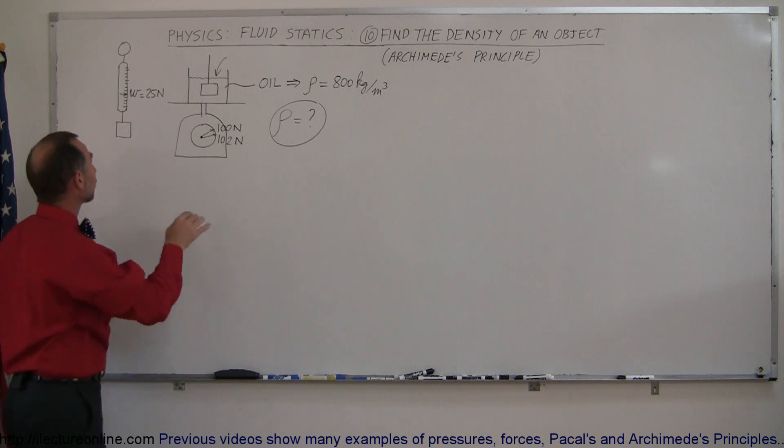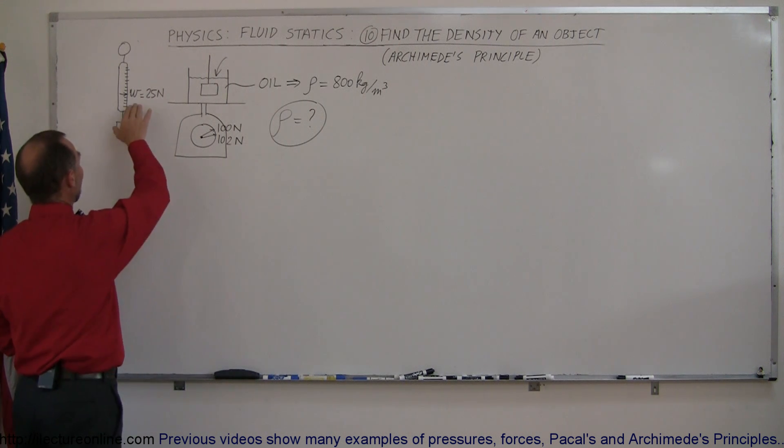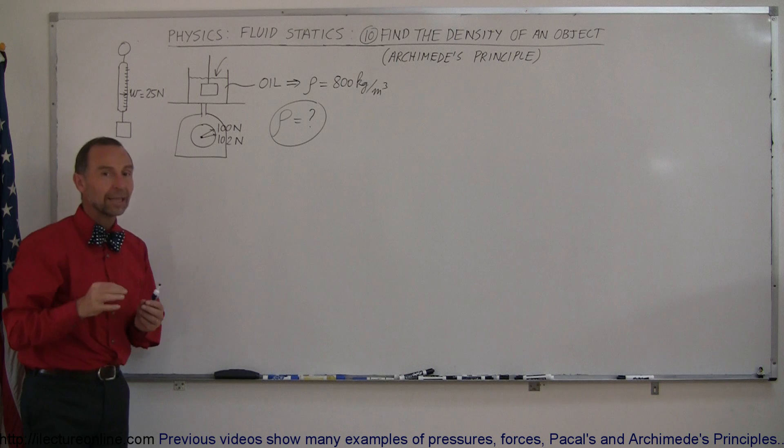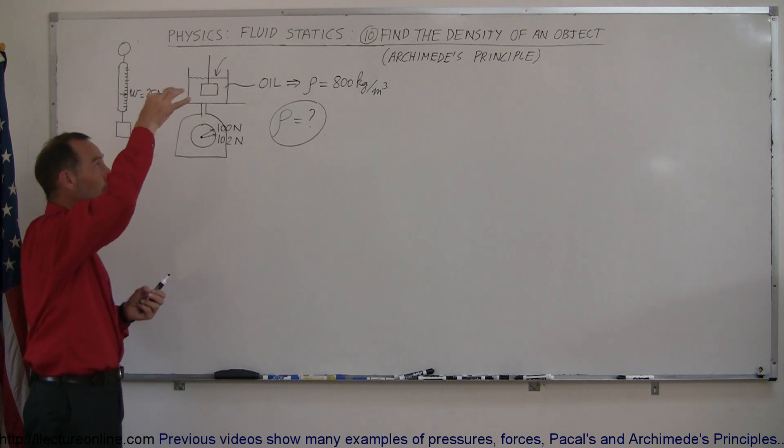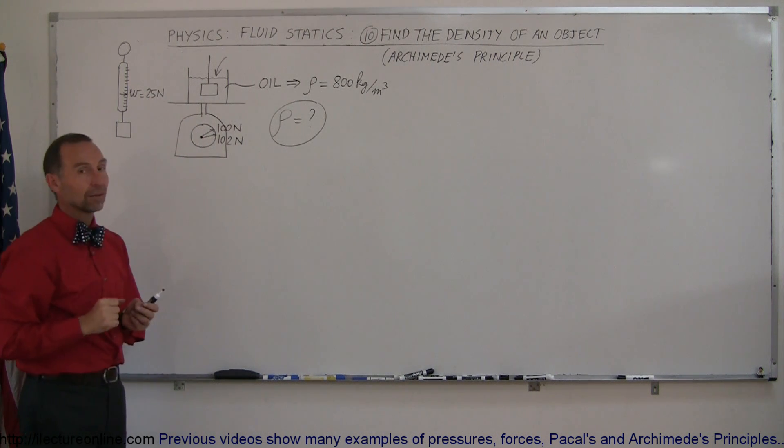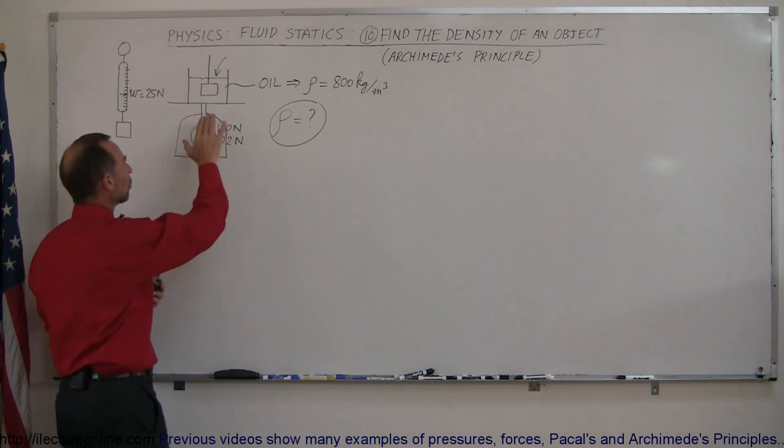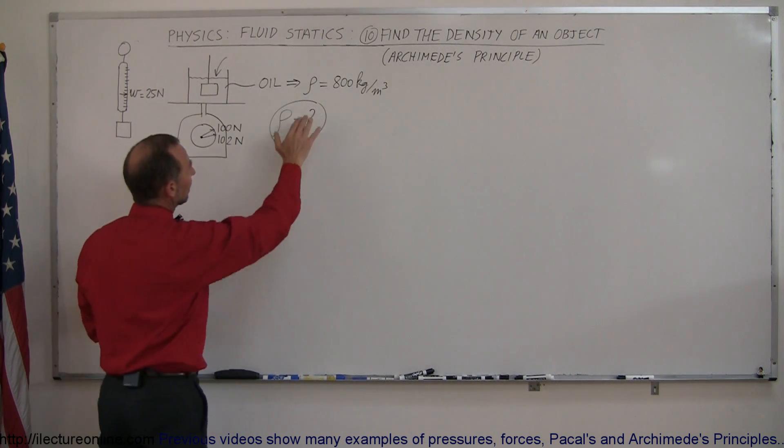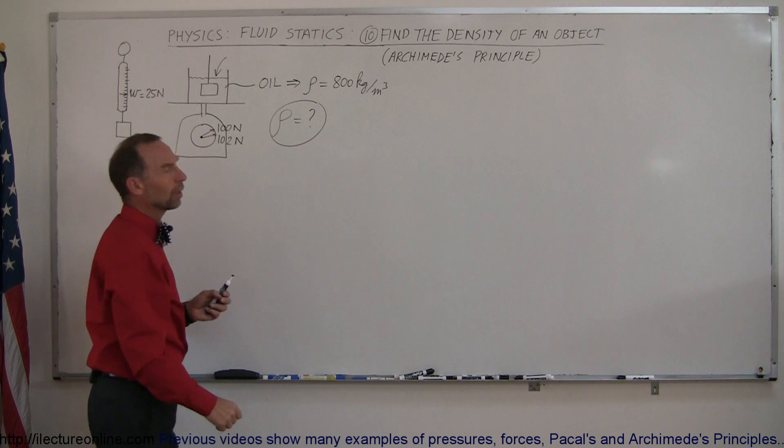Now we take an object that we measured in air first and found out the weight to be 25 newtons, and then we hang it on a string and submerge it from the string into that cup. And in this case, it wasn't water, we made it oil, so that the density is a little bit less than what it is for water.